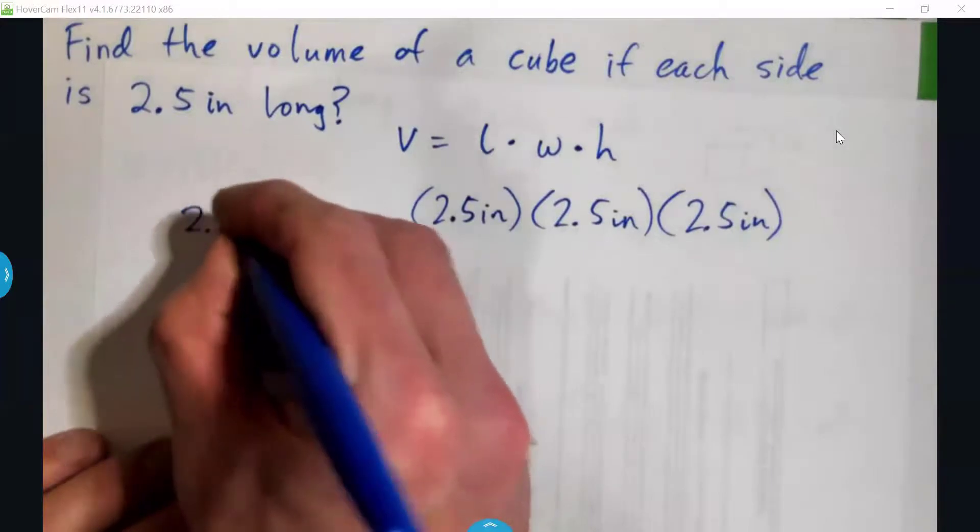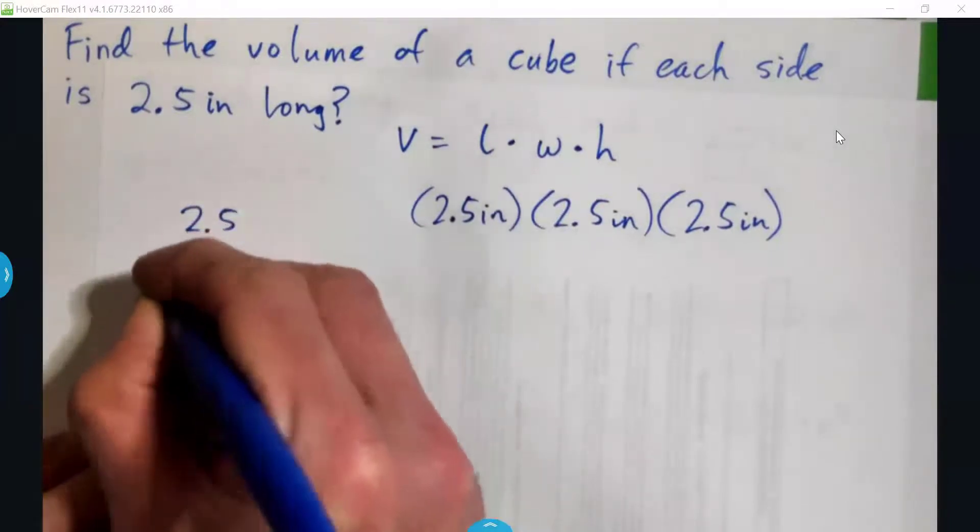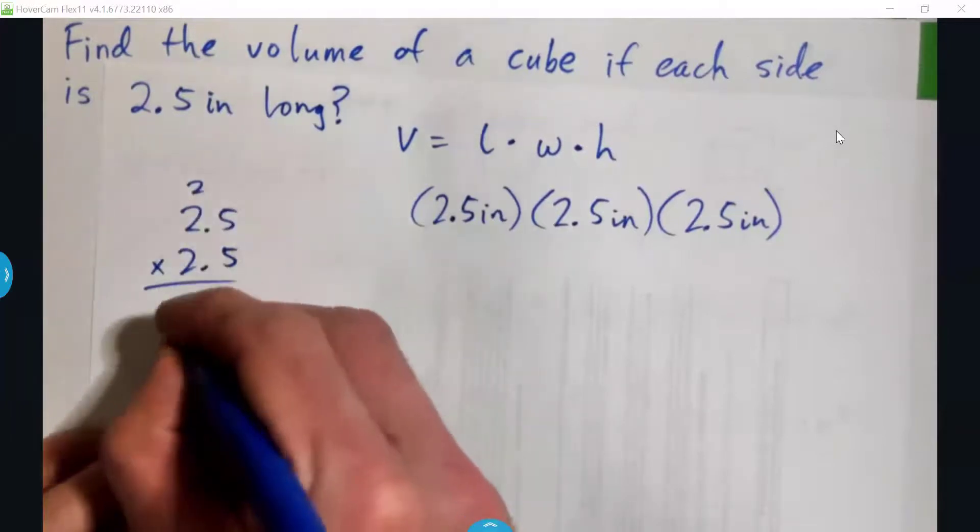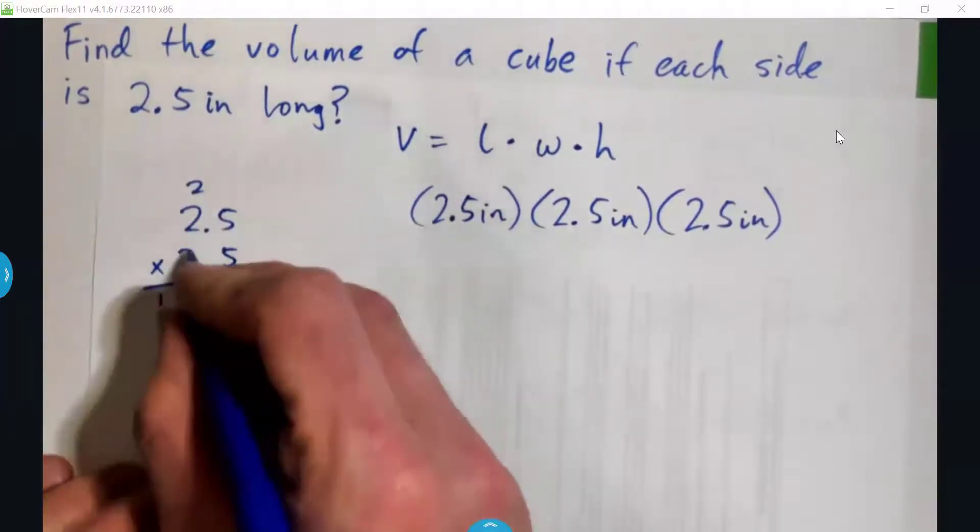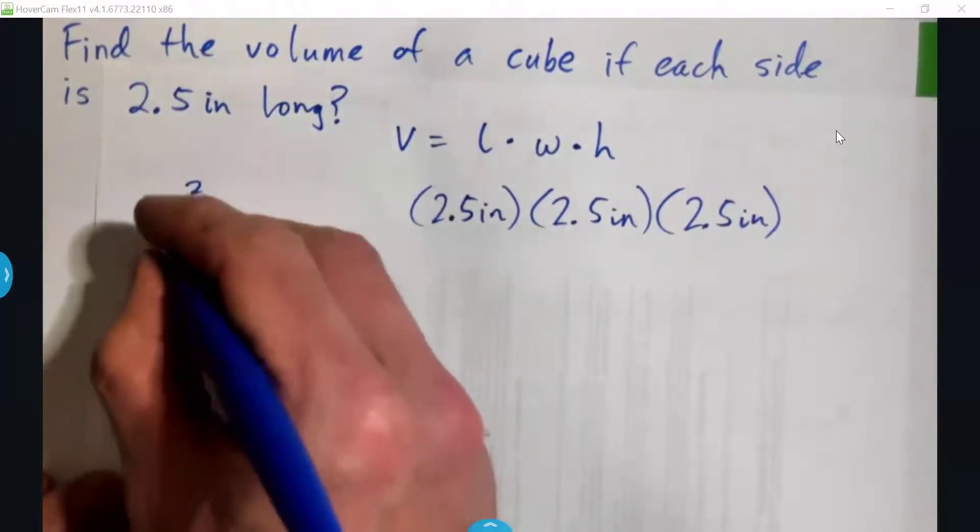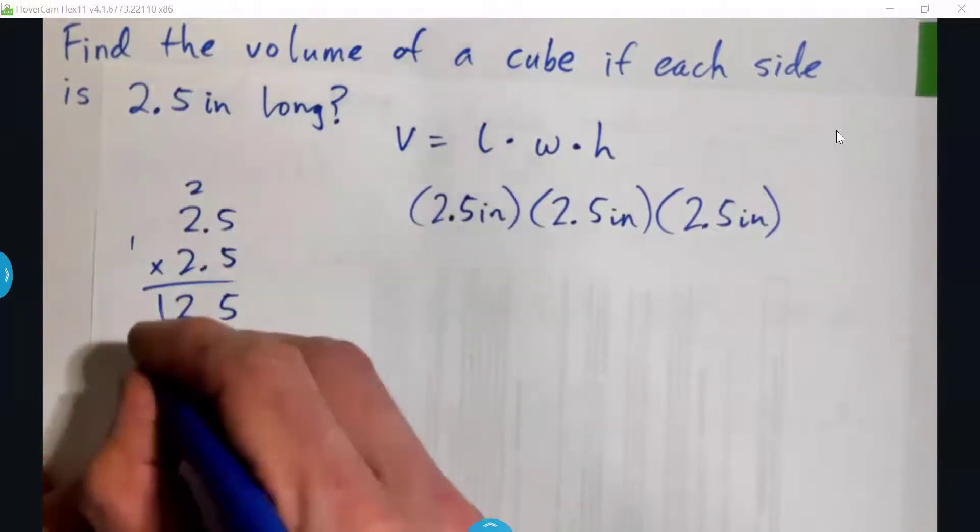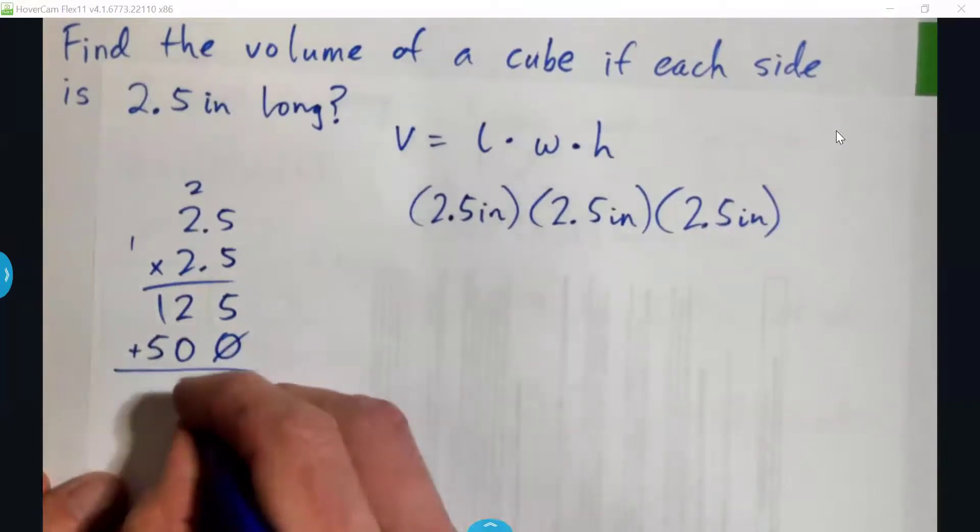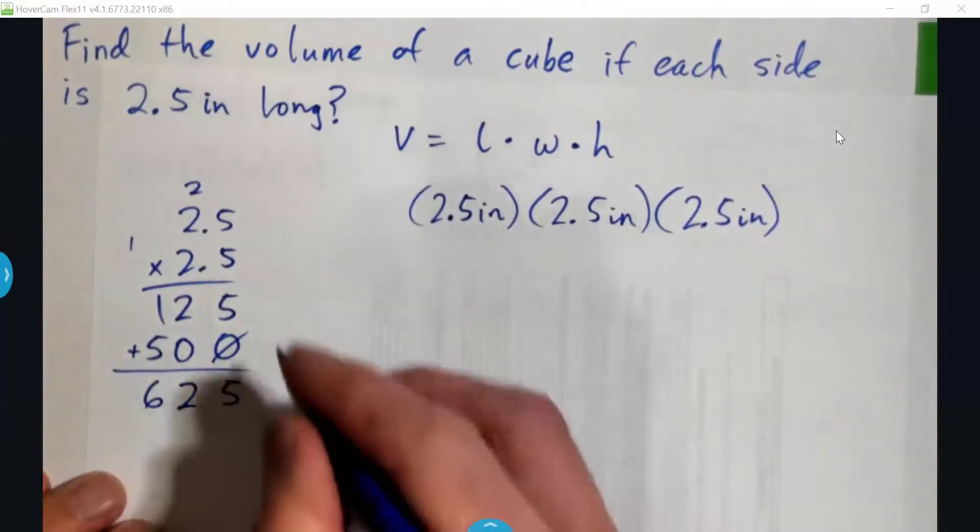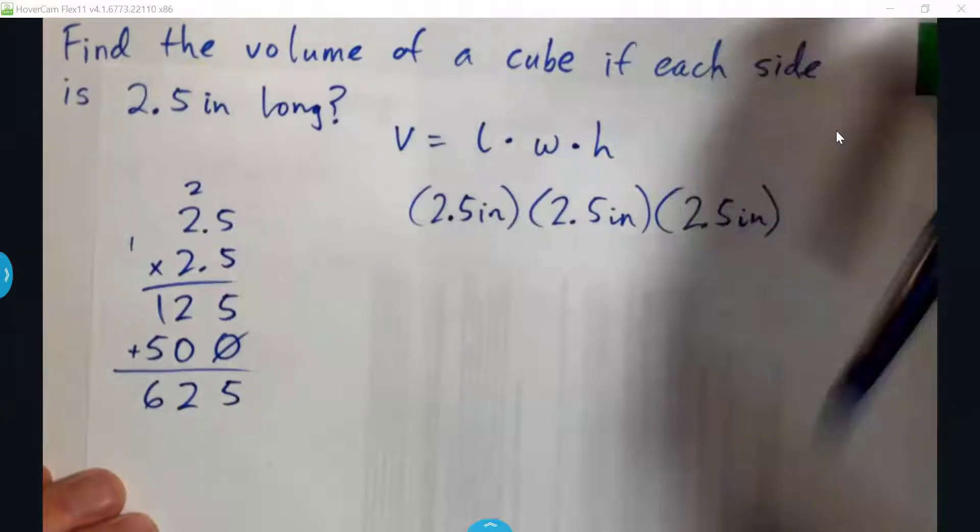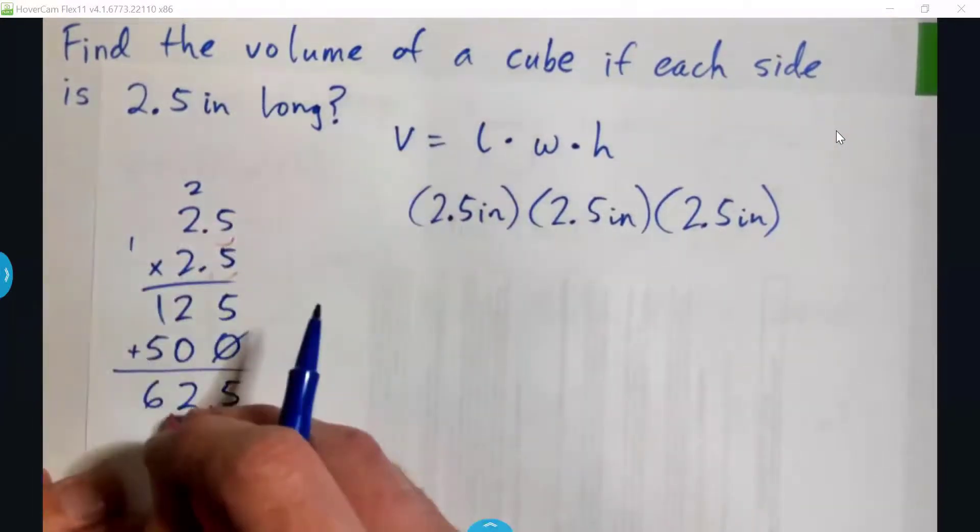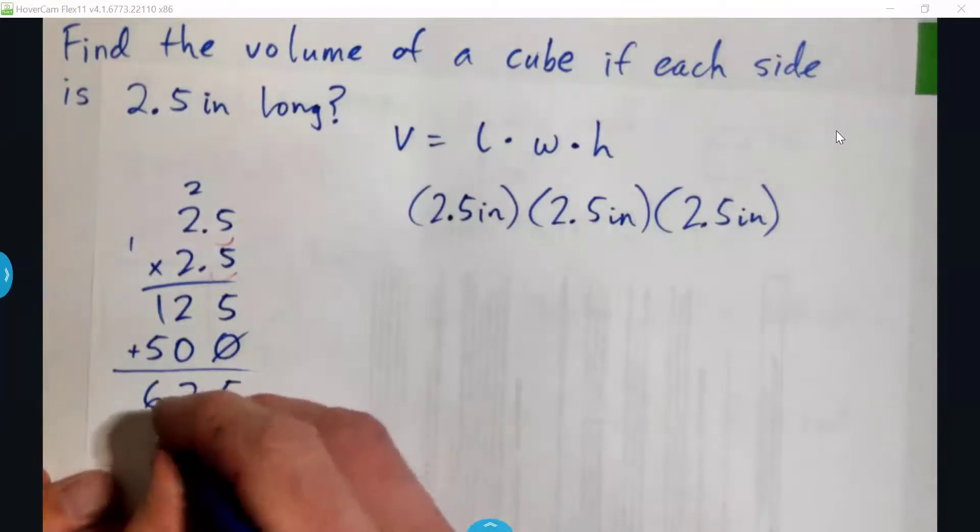Let's see, 2.5 times 2.5. 5 times 5, 25, carry 2. 5, 2 is 10 and 2 is 12, put down a 0. 2 times 5 is 10, carry 1. 2 times 2 is 4 and 1 is 5. And then add 5, 2, 6.5, and then we've got 2 decimal places in the question. So 1, 2 in the answer, so 6.25.